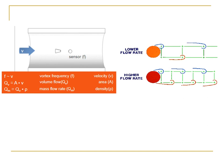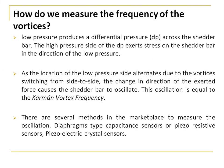At lower flow rates the frequency of vortex formation is low, and at higher flow rates the frequency is higher. This frequency is directly proportional to velocity, and since volumetric flow rate equals pipe area times velocity, we can obtain the volumetric flow rate. If we multiply the volumetric flow rate by the fluid density, we get the mass flow rate.